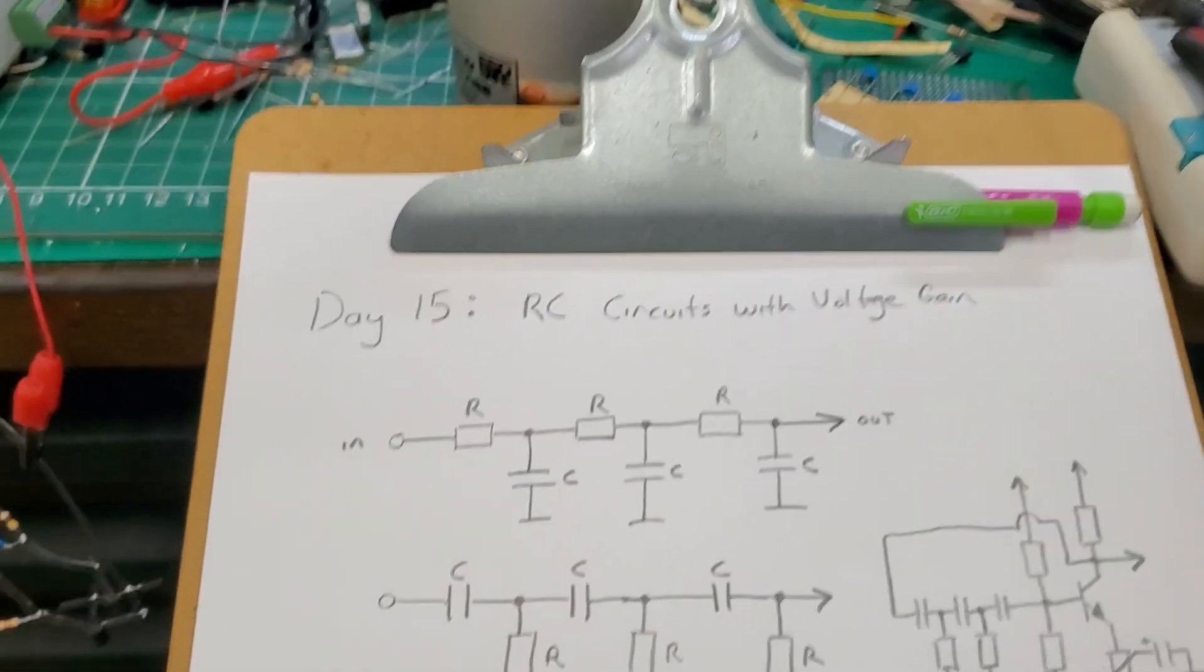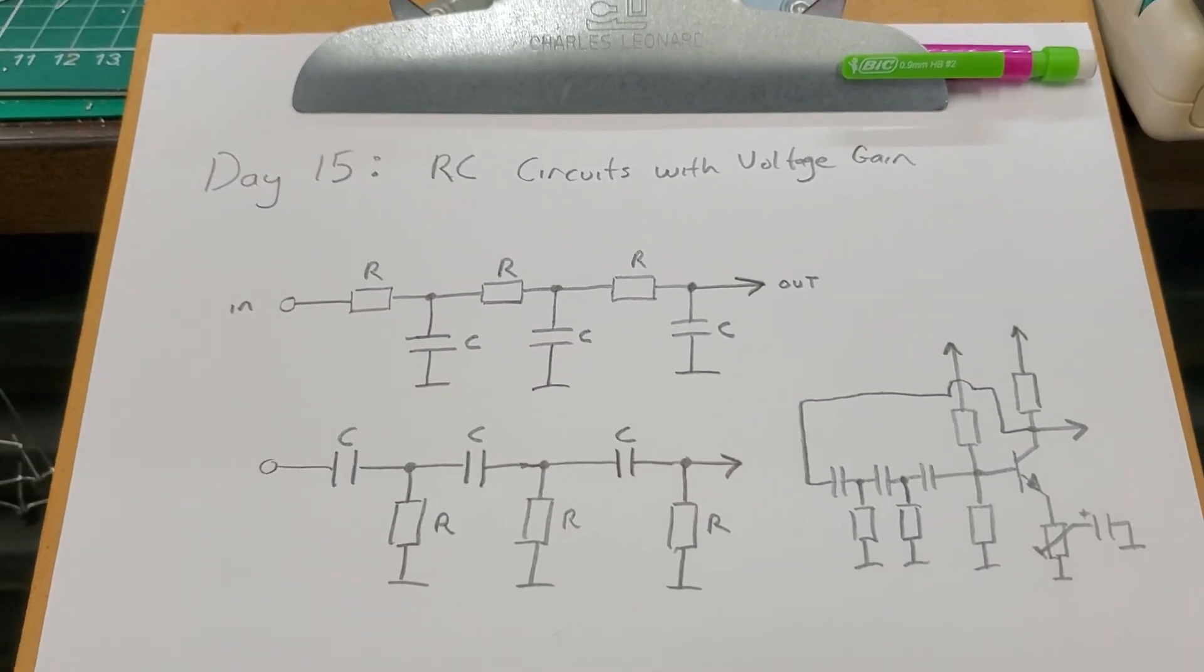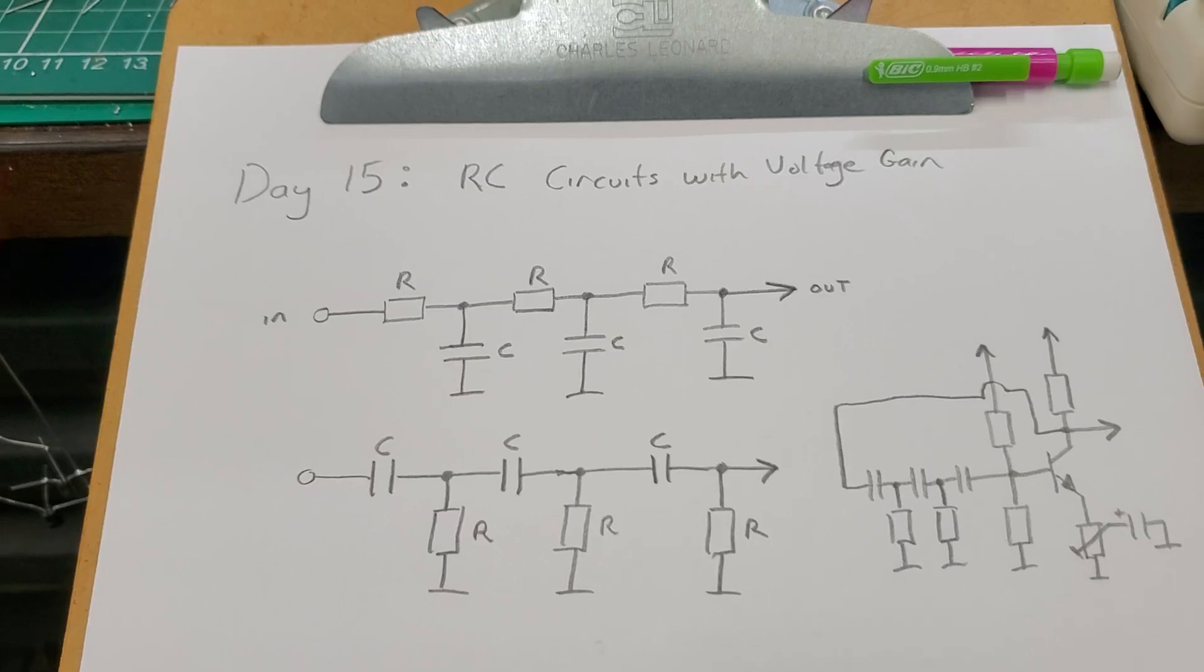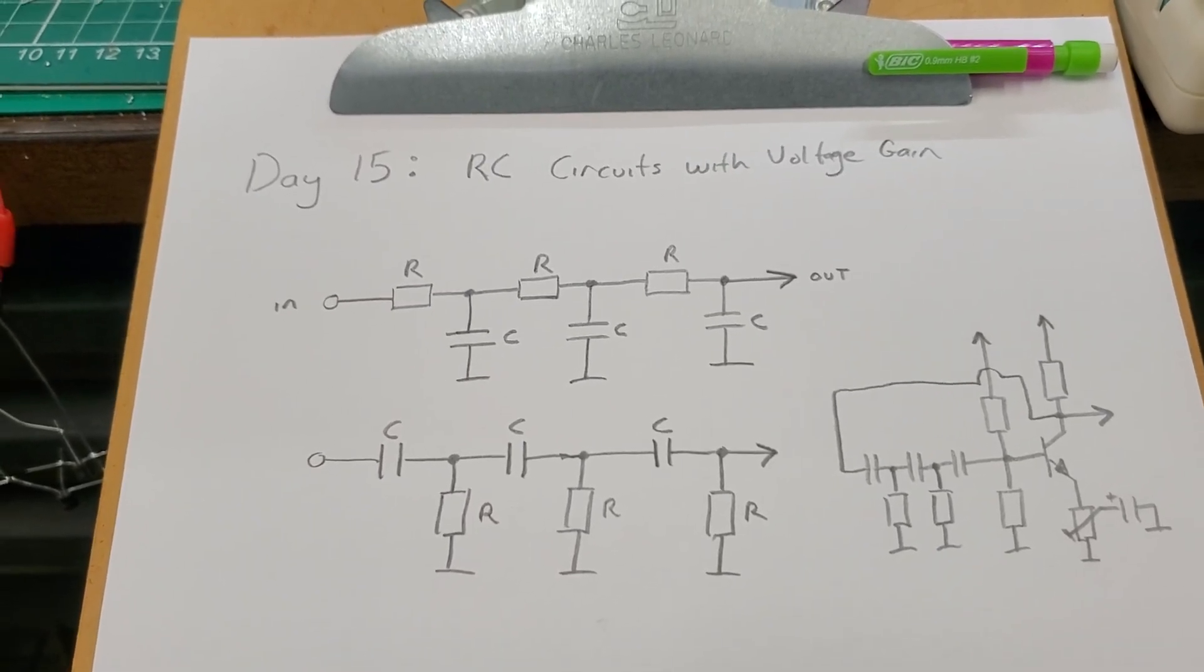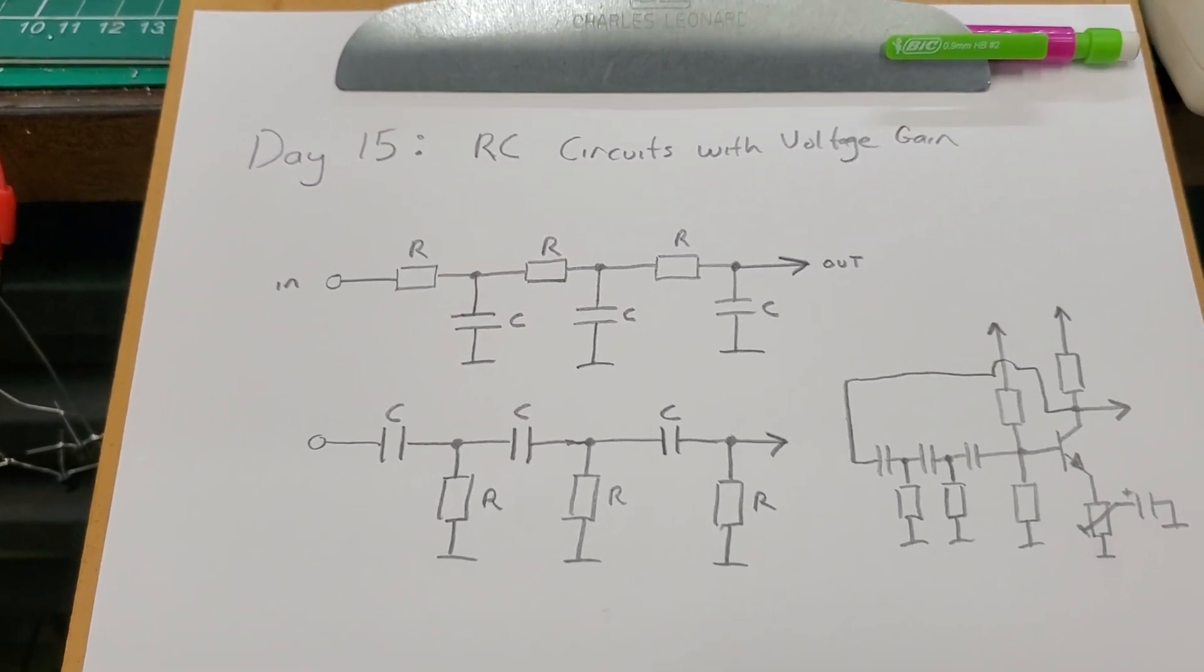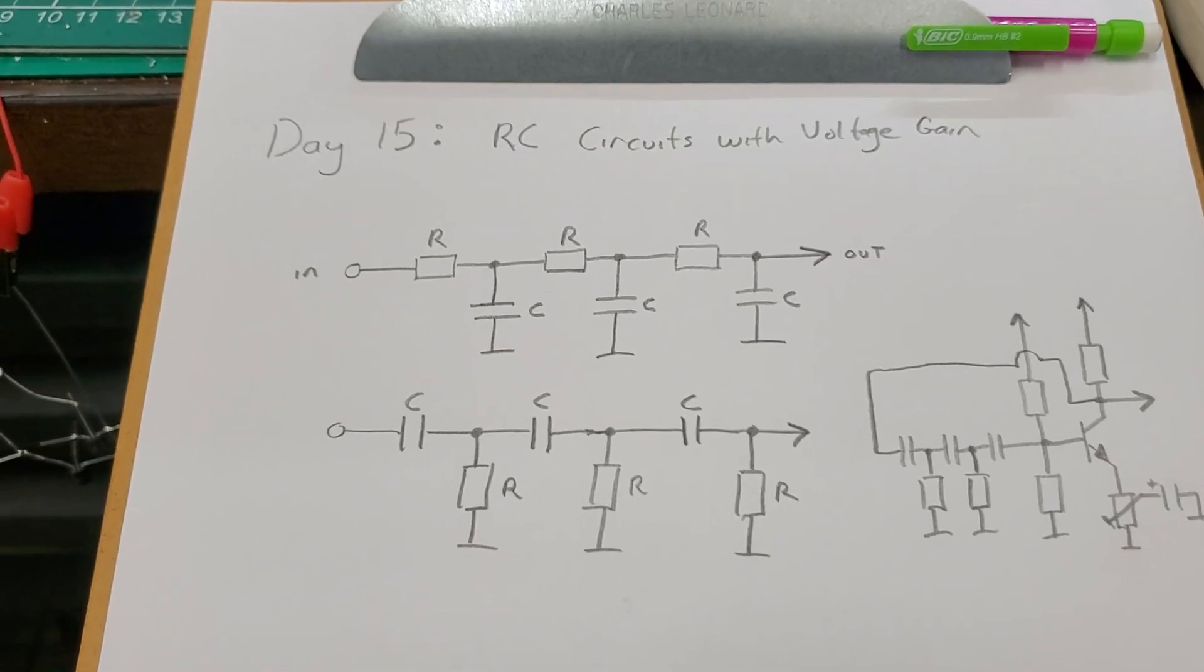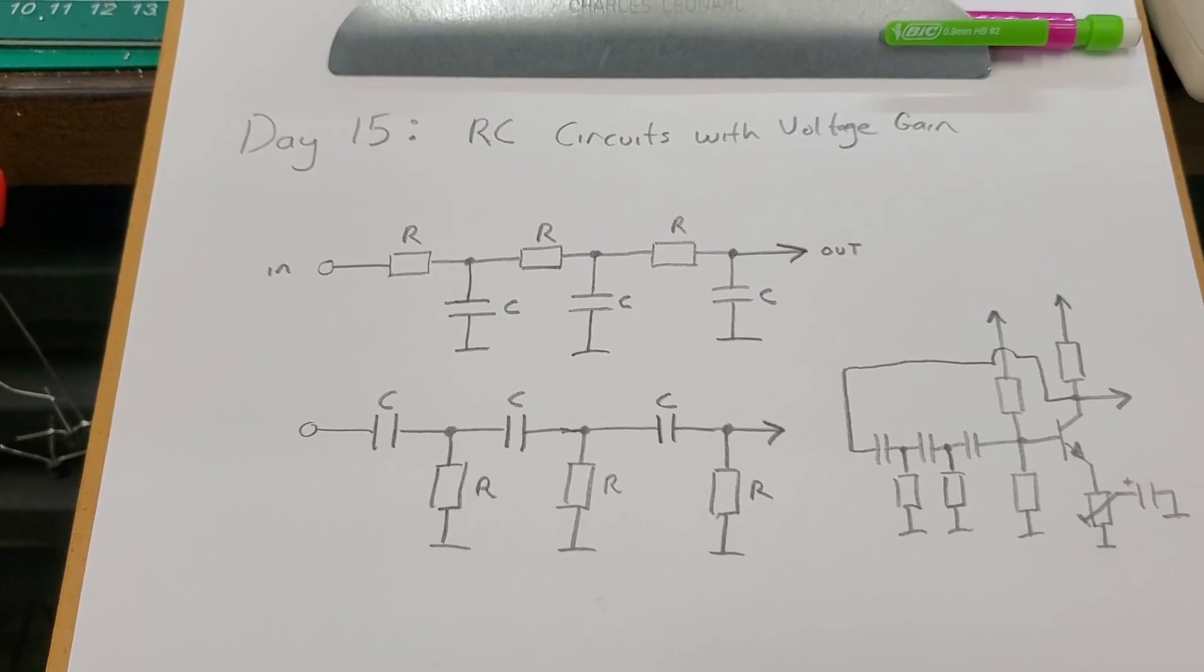G'day everyone, day 15: RC circuits with voltage gain. This might be a controversial one because when I say this to most people who've never heard of the concept, they just do not believe me that a simple RC circuit can actually have voltage gain. I mean, resistors are fundamentally dissipative, capacitors have losses, so most people have at least had the intuition that any topology constructed of only RC can never have voltage gain.